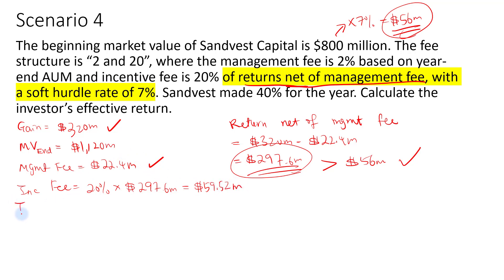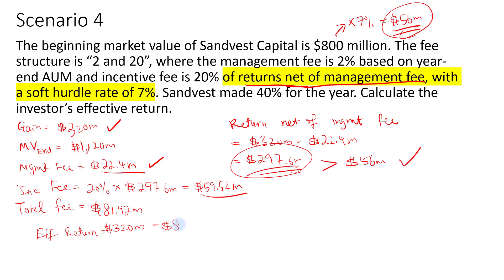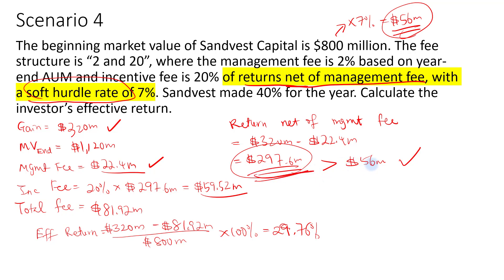The total fee is $22.4 million plus $59.52 million, equaling $81.92 million. The effective return is $320 million minus total fees divided by $800 million times 100%, giving us 29.76%. This is the same as scenario two. The difference is there is a check here to make sure the net return is greater than the hurdle. If the net return is lower than the hurdle, then no incentive fee will be paid.